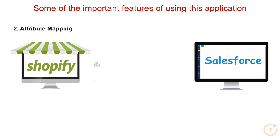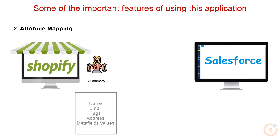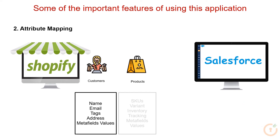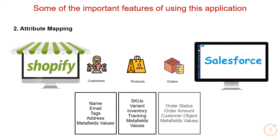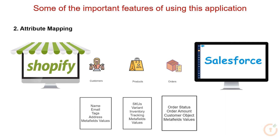You may map customer attributes like customer name, email, tags, and address. Product attributes like product name, product ID, and product color. Order attributes like order date, order email, and other meta field values between your Shopify store and Salesforce CRM.